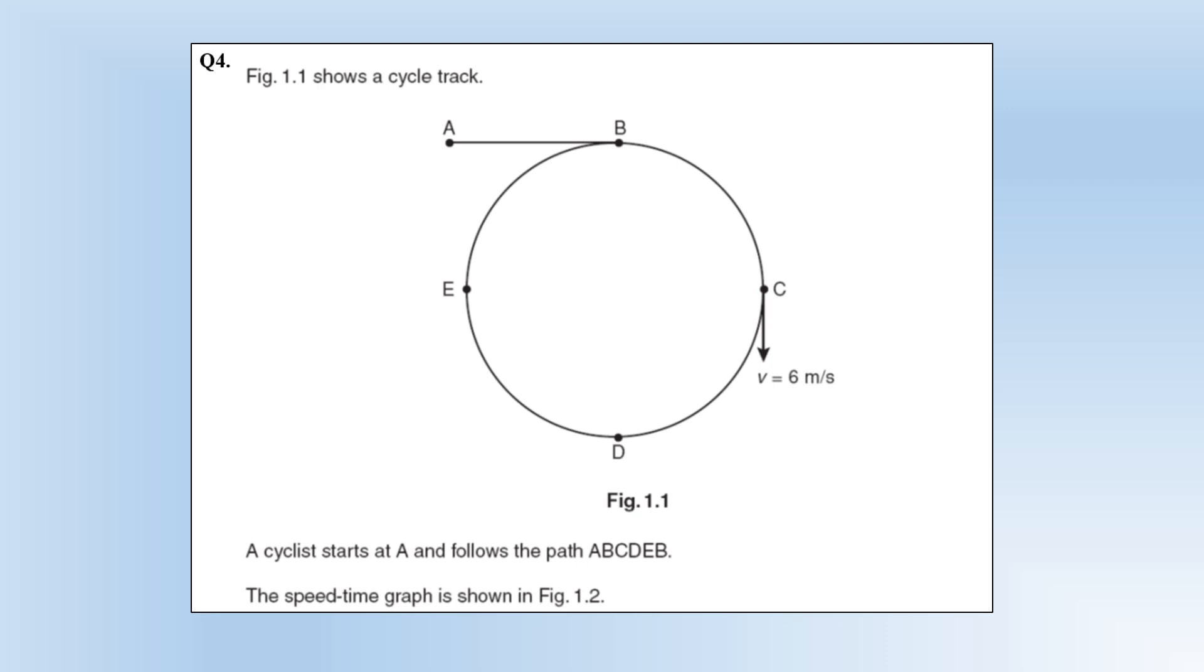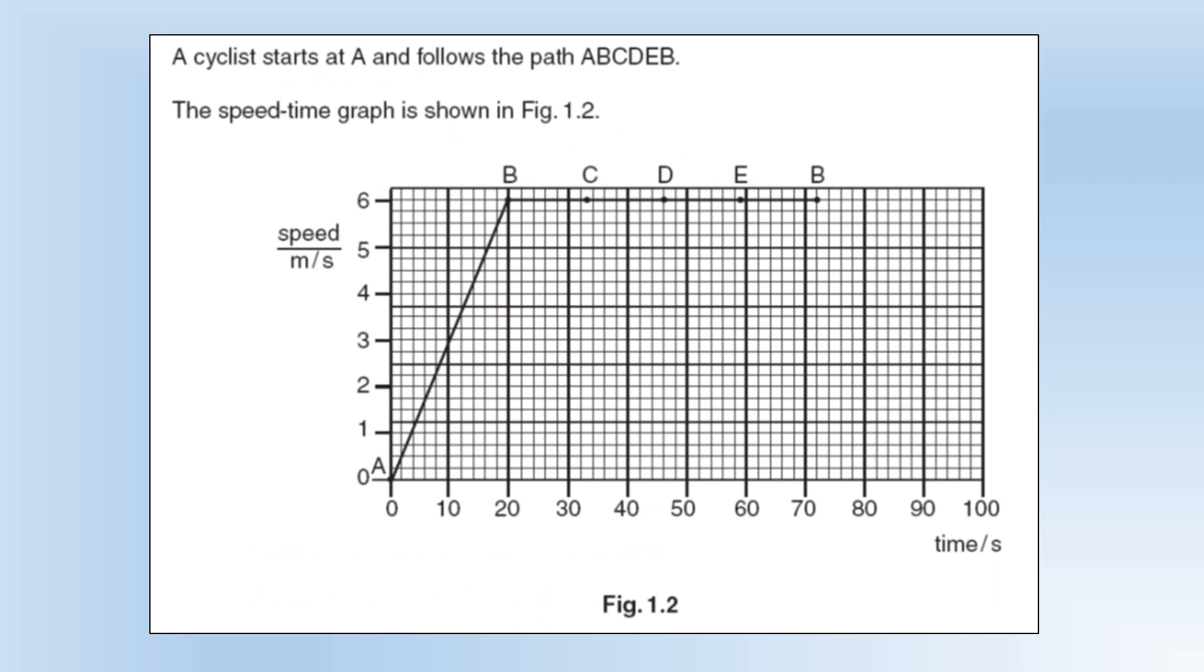The diagram shows a cycle track. The cyclist starts at A, follows path A, B, C, D, E, B - initially in a straight line and then going around a complete circle. We've got a diagram showing the speed versus time. Going from A to B they're experiencing constant acceleration, and then from B onwards the speed is constant. But the thing to note here is the direction is always changing because you're going around in a circle. So even though speed is constant, velocity is not because the direction is changing.